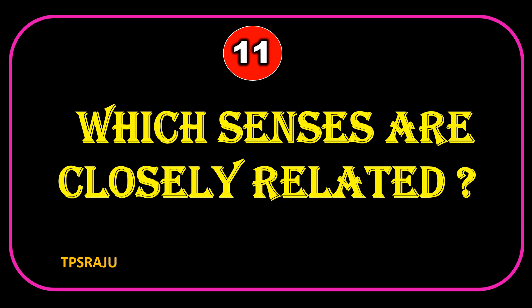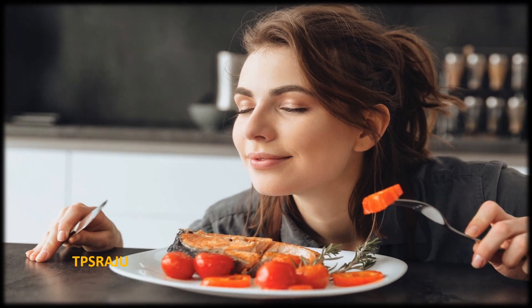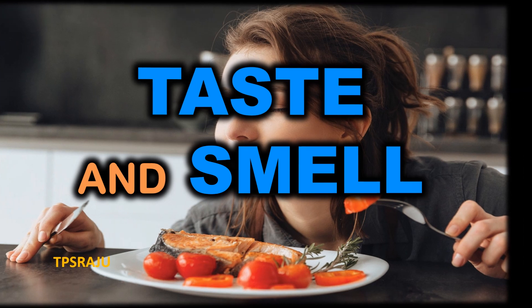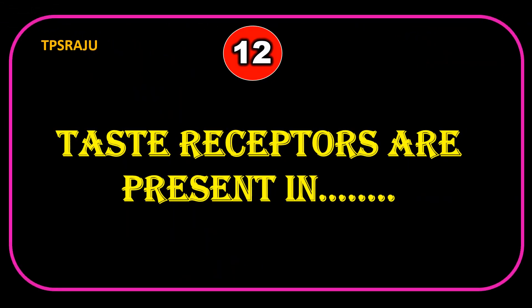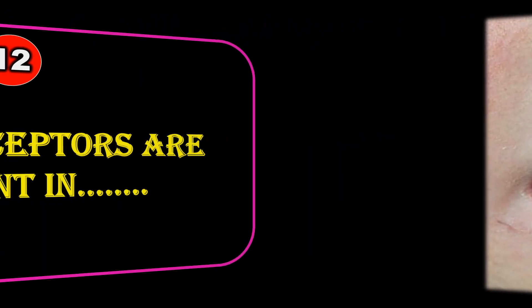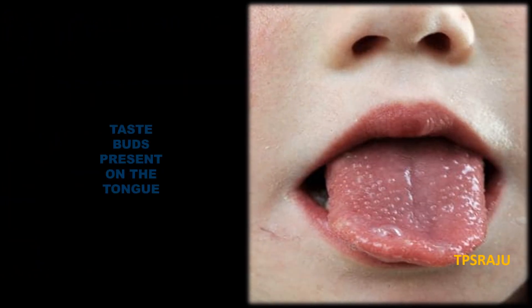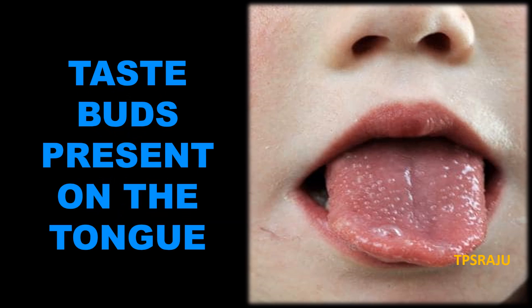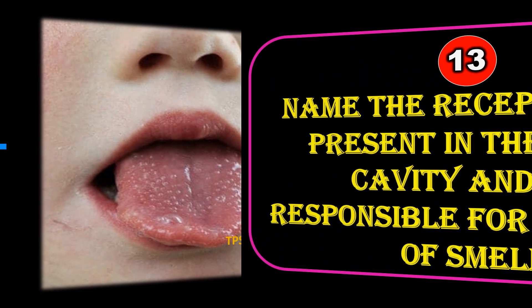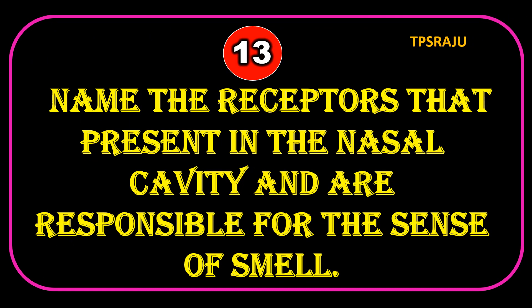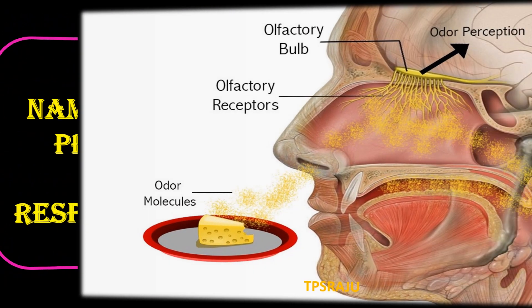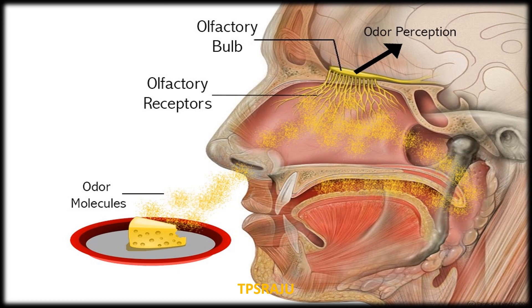Which senses are closely related? Taste and smell. Taste receptors are present in taste buds present on the tongue.